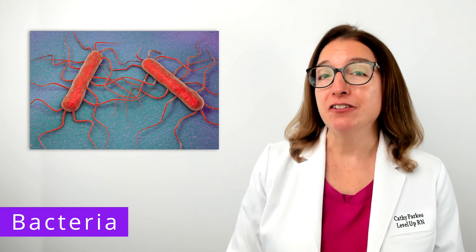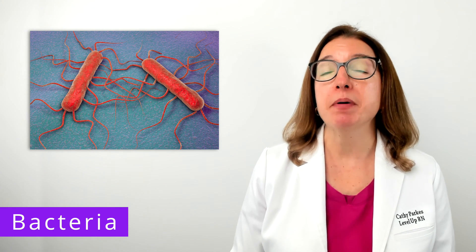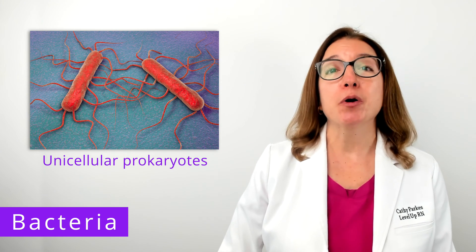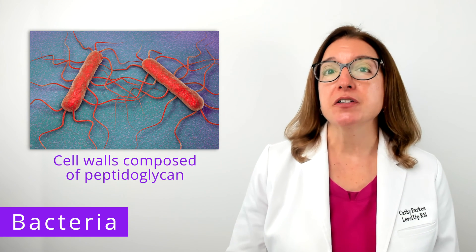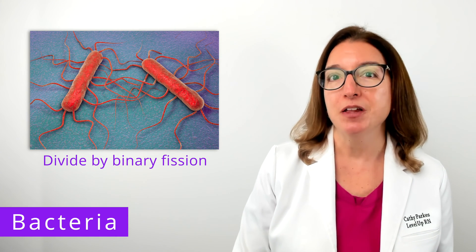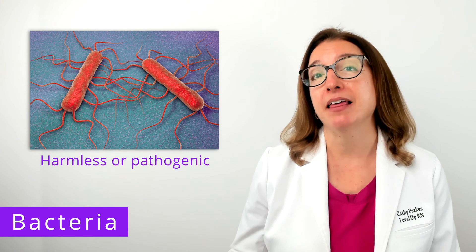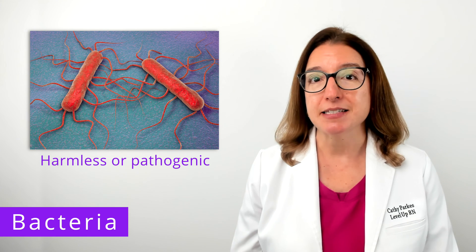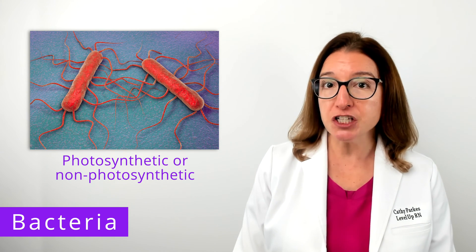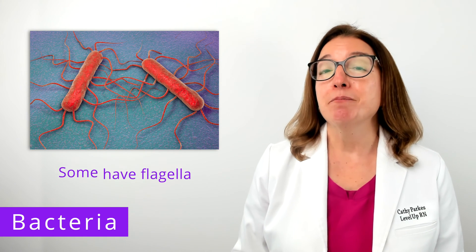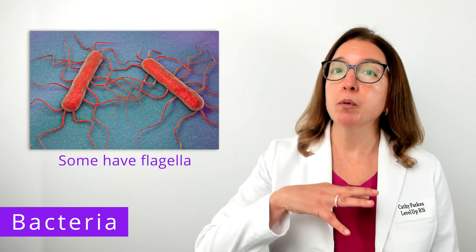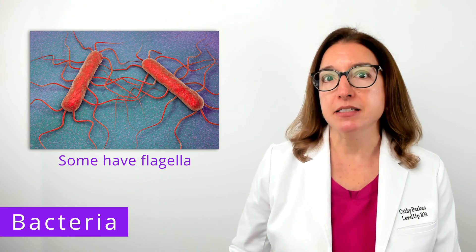Let's go over some key attributes of microorganisms, starting with bacteria. Bacteria are unicellular prokaryotes — unicellular means composed of one cell. Bacterial cell walls contain peptidoglycan, and bacterial cells divide via binary fission. Most bacteria are harmless, but some may be pathogenic, meaning they can cause disease. Some bacteria are photosynthetic, able to convert sunlight into chemical energy, whereas others are not. Some bacteria will have flagella — long whip-like structures that help propel the cell forward — whereas some bacteria lack flagella.